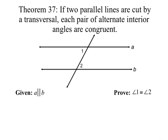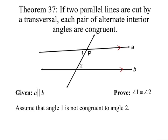Let's start with our proof, and we're going to use indirect proof again. We're given that two lines, lines A and B, are parallel. We're going to prove that angles 1 and 2 are congruent — they form a pair of alternate interior angles. Since we're using indirect proof, we'll start by assuming the opposite of what we're trying to prove: we assume that angle 1 is not congruent to angle 2.